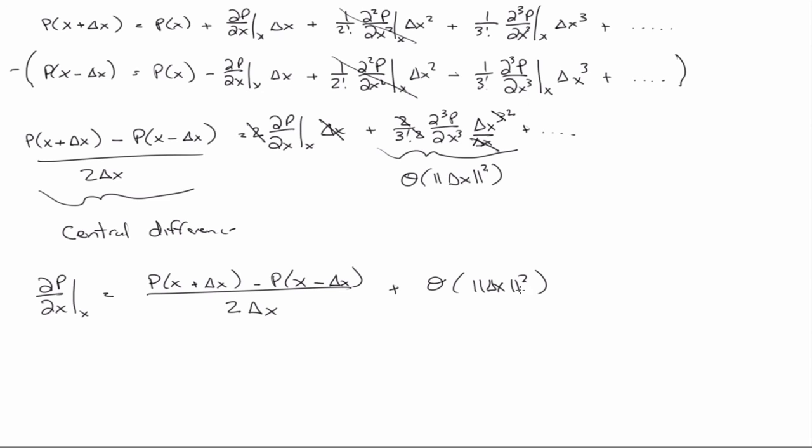You might ask why you wouldn't always use central difference. The trade-off is that you always have to do two functional evaluations — one in front and one behind. With a forward difference approximation you can sometimes get away with fewer evaluations. The computational cost of two evaluations may in some cases lead to greater computational expense. We'll see that later. See you Wednesday.